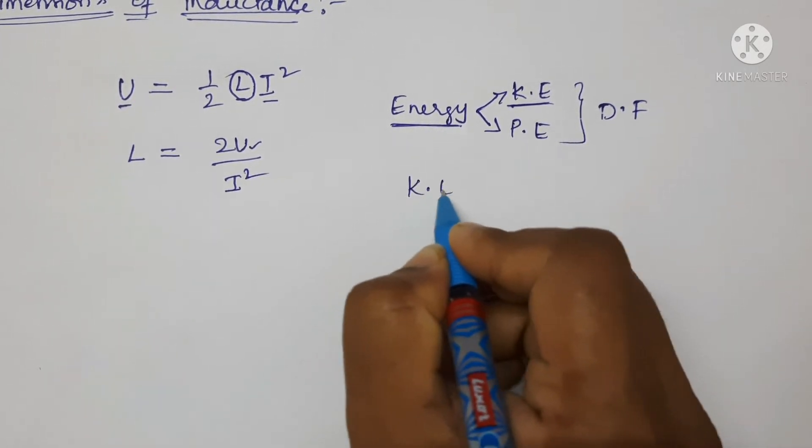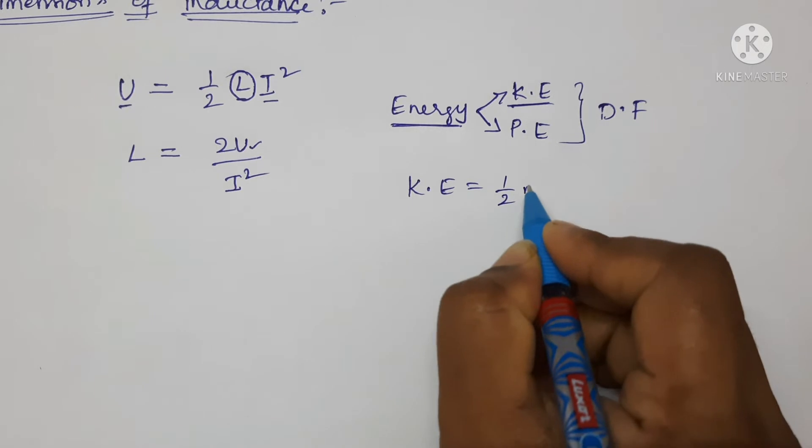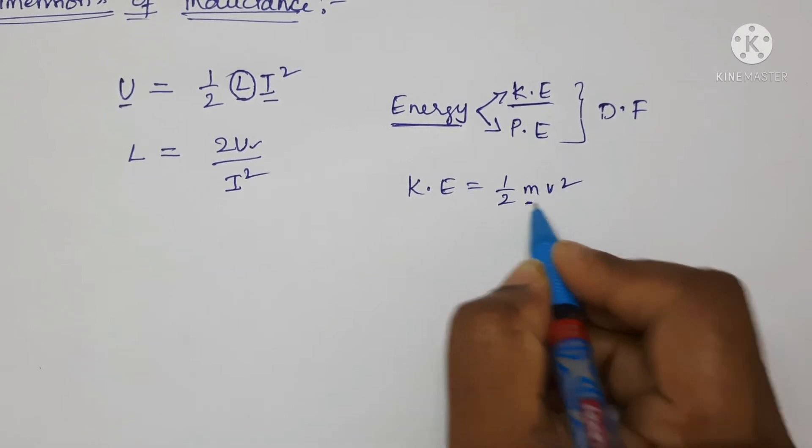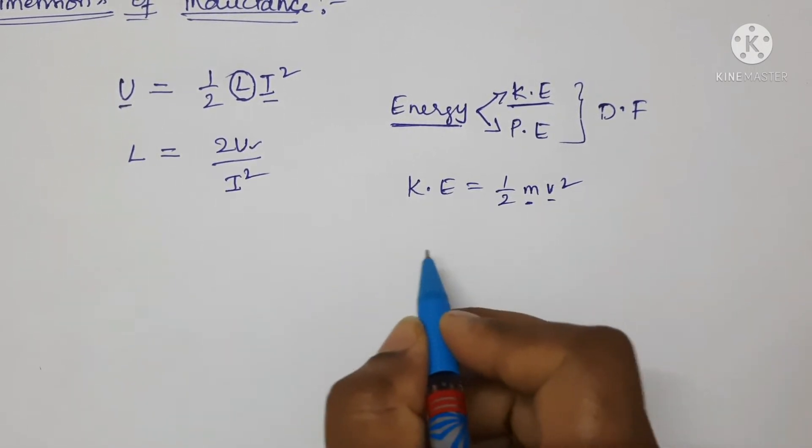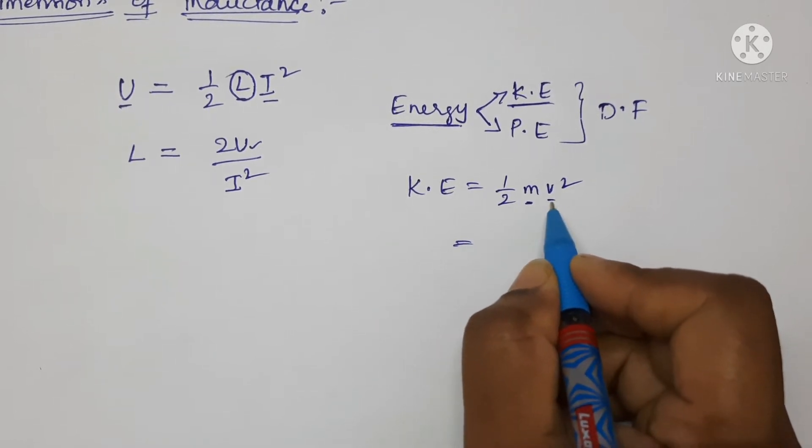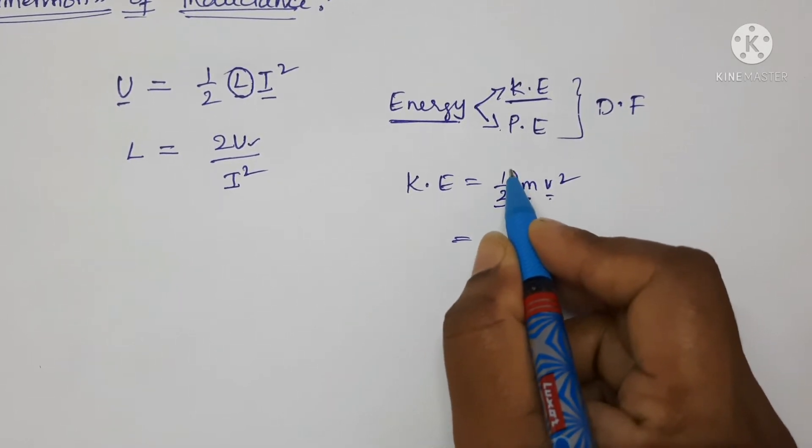The formula for kinetic energy is half m v squared, where m is the mass and v is the velocity. Now write the SI unit for mass and velocity. Half is a constant and has no dimensions.